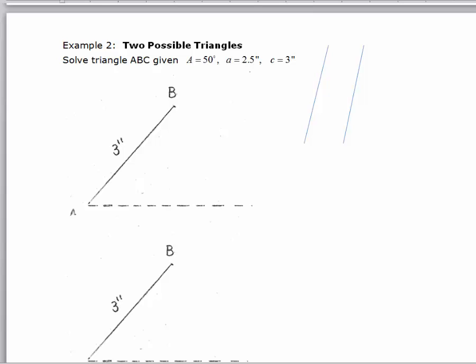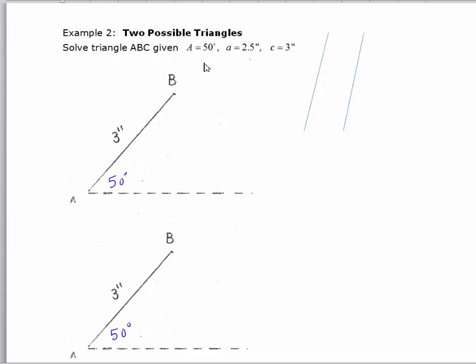In the second example, we have a case where there are two triangles that are possible with the given measurements. We have angle A equal to 50 degrees, side A is 2.5, and side C is 3.